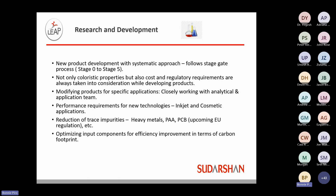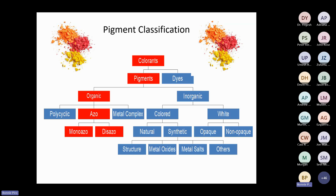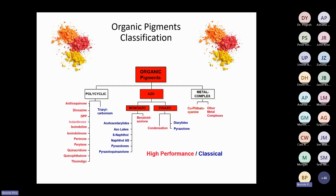We are always looking to optimize all of our input components for efficiency improvement, as well as keeping a very close eye on our carbon footprint as we move forward with new developments. We're happy to share that we have a silver rating with the Ecovadis organization, and we're working towards our gold rating. The azo pigments are organic in nature. There are two basic types: the monoazo and the disazo, but they also fall into another classification such as high-performance.